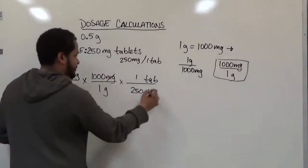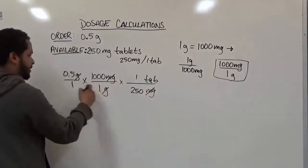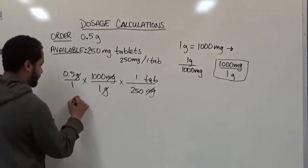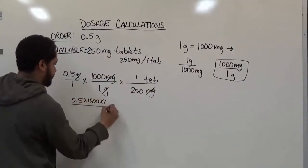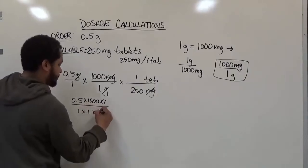The milligrams and milligrams reduce, the grams with grams, and we've converted to tabs. What we're left with is 0.5 times 1,000 times 1 over 1 times 1 times 250.